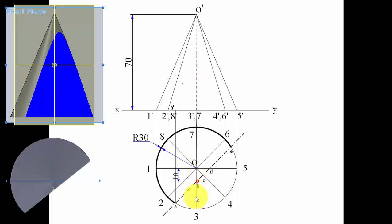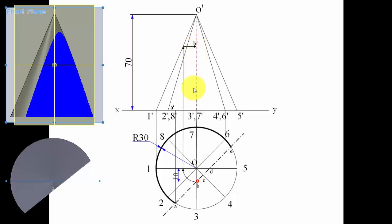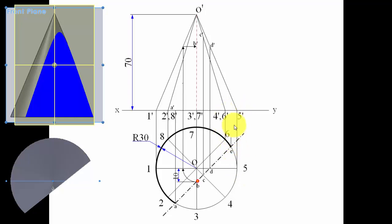Point B lies on generator O3-dash in the front view, but drawing a line from B overlaps the generator. The trick is to take O as center and OB as radius, rotate clockwise until you reach the outline — a quarter circle — then project upward and turn right to get point B-dash. For point C, project from O4-dash to get point C. Similarly project for point D-dash, and point E lies between 5-dash and 6-dash on the circular base.